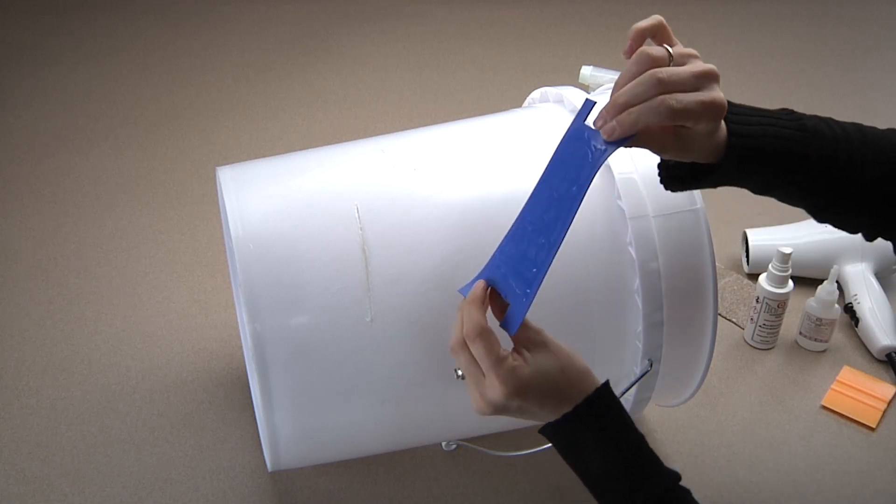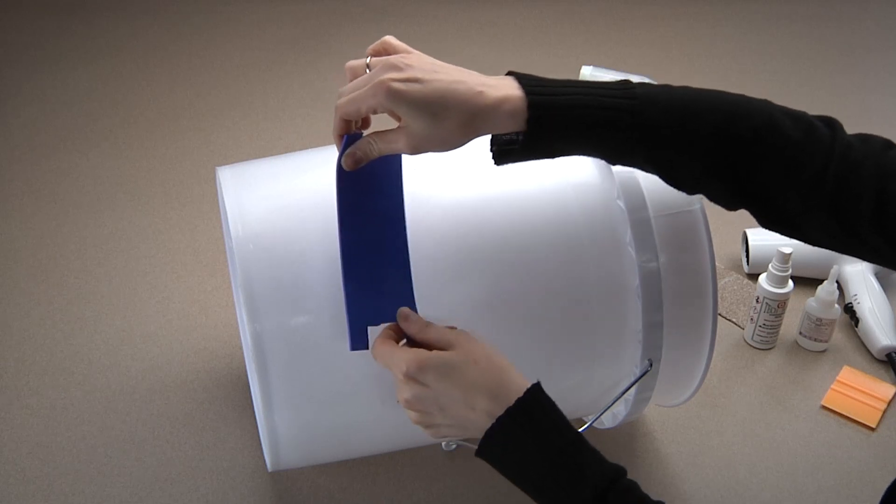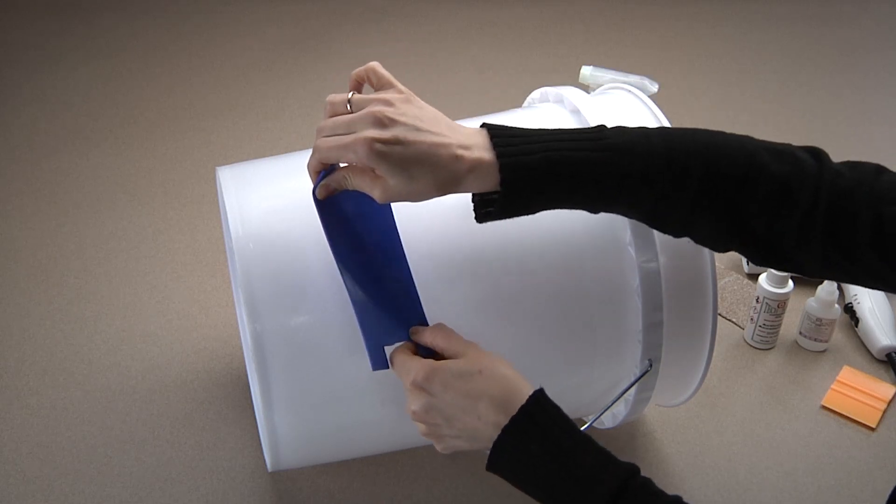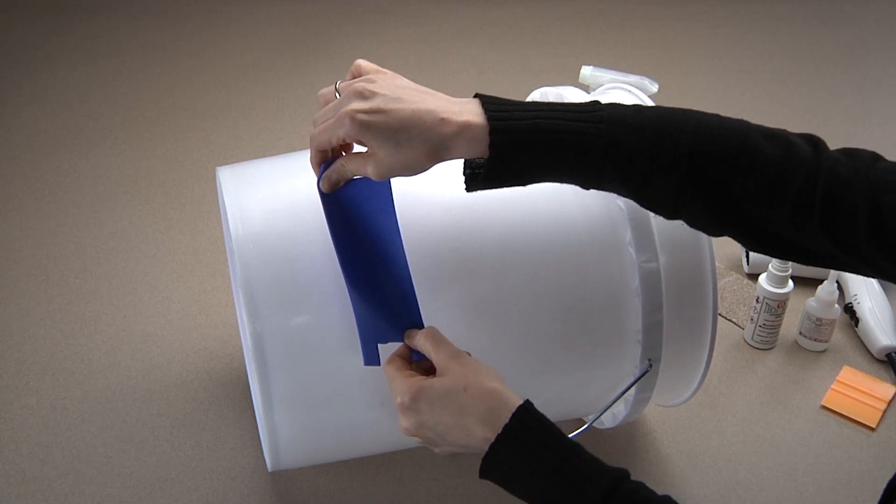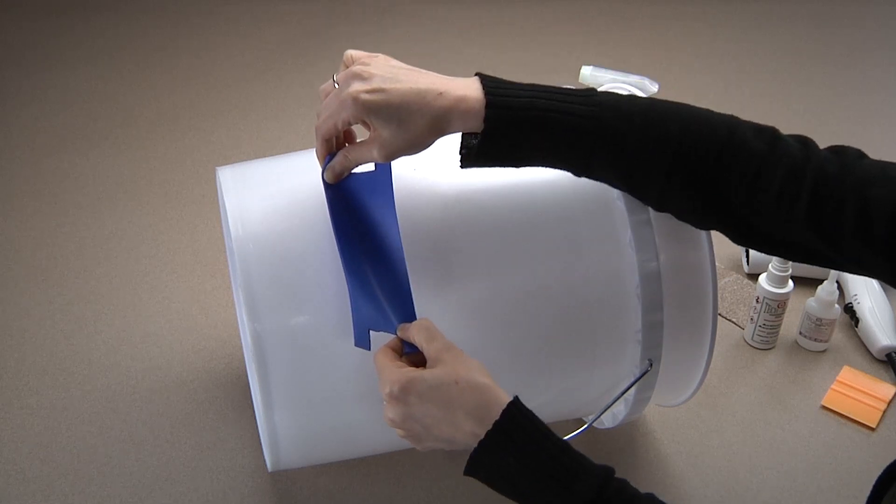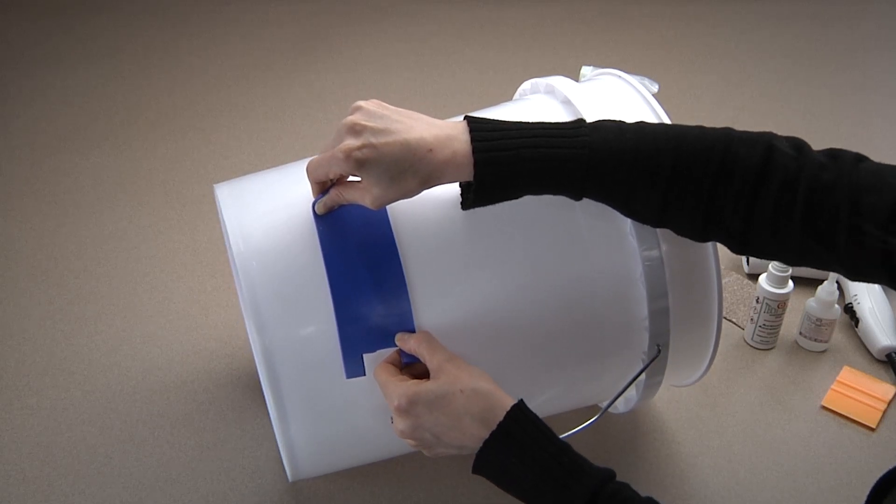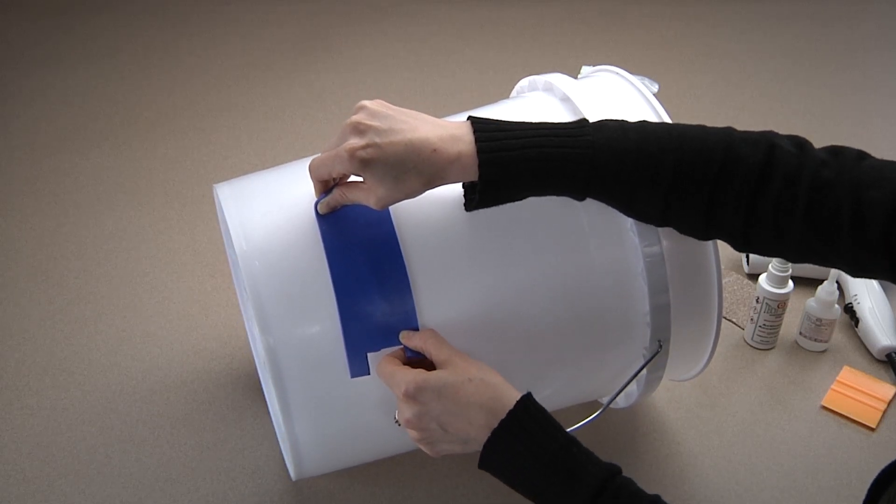Now, we will apply the tension to the patch. So, we will pull, and as you will see, the other two tabs will curl up, showing we've put enough tension onto it. Now, press the S Patch against the prepared area. The grab will occur in seconds.